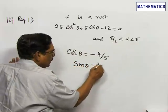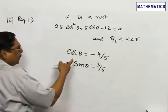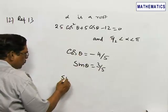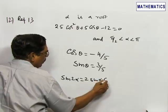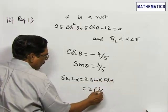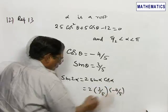Therefore, if alpha is a root of this equation, sine 2 alpha will be equal to 2 sine alpha times cos alpha. That equals 2 times sine alpha, which is 3 by 5, times cos alpha, which is minus 4 by 5, which equals minus 24 by 25.